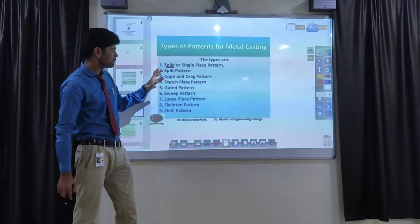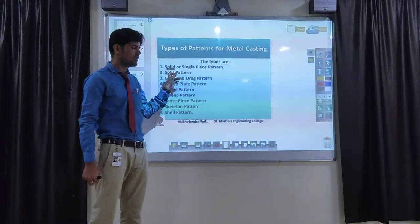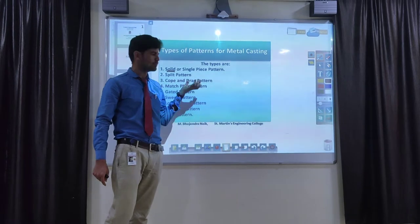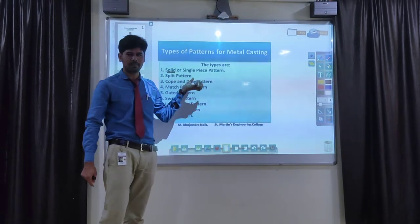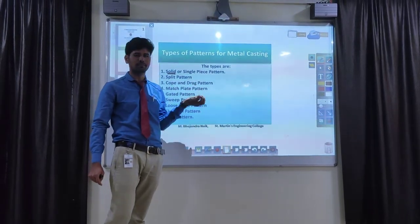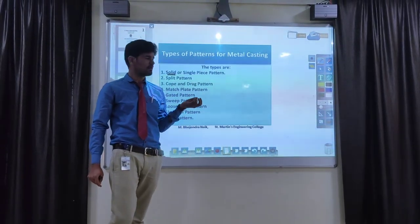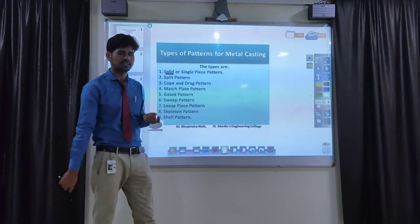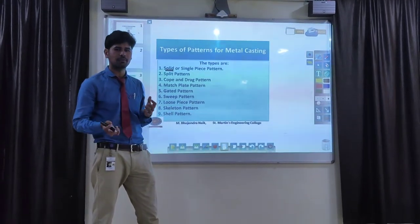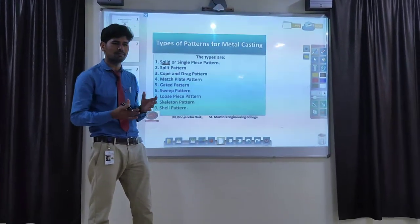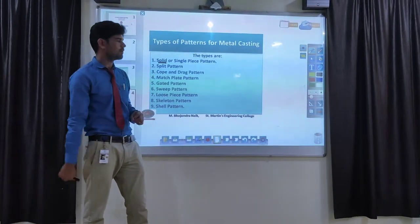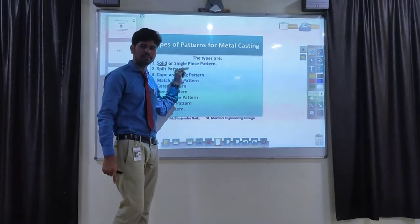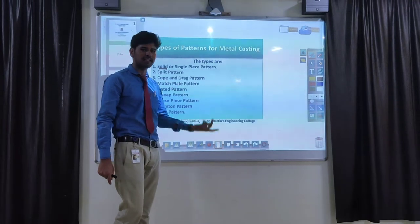The first pattern is called a solid piece pattern or single piece pattern. A solid piece pattern is one of the simplest and most basic models of pattern. It is a simple object without any joints, and that object is called a solid piece pattern or single piece pattern.